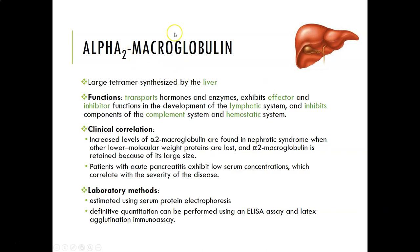Alpha-2-macroglobulin is retained because it is huge — "macro" meaning big — so it cannot be lost through the kidneys. Also, patients with acute pancreatitis exhibit low serum concentrations that correlate with severity of disease, so this may be ordered to assess how severe the pancreatitis is. Levels are estimated using serum protein electrophoresis, but for definitive quantitation you need an ELISA or latex agglutination immunoassay.